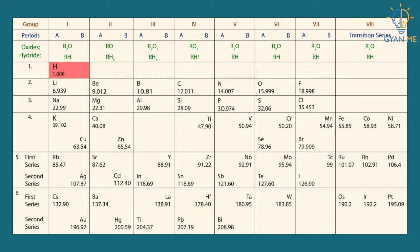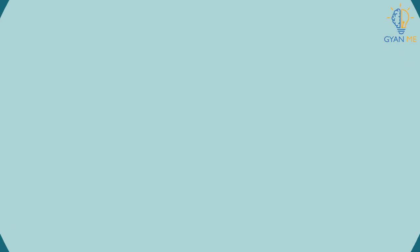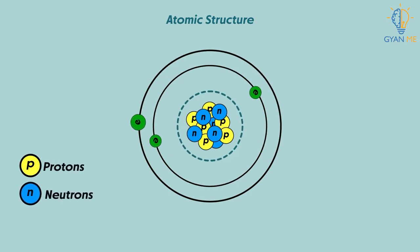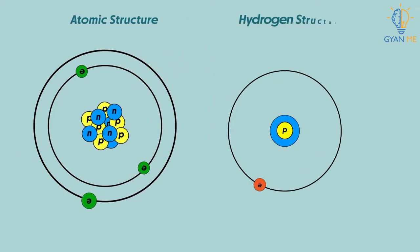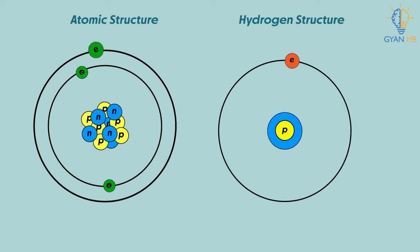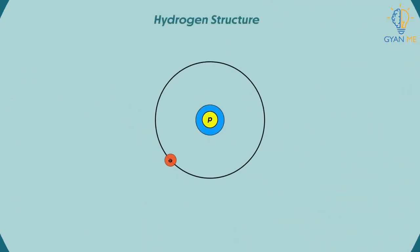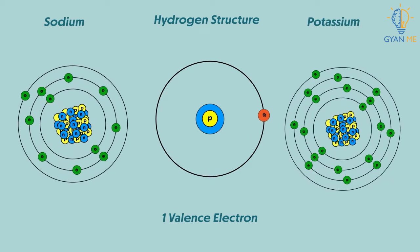Some years after Mendeleev created the periodic table, the atomic structure of the elements were discovered. It was found that every atom has a nucleus in the center that contains protons and neutrons, as well as the electrons which move in the orbits around the nucleus. If we look at the electronic structure of hydrogen, it is similar to that of the elements of the first group. Observe that it has one valence electron, just like sodium or potassium.